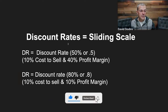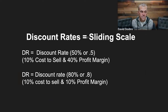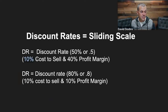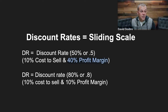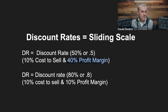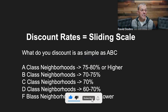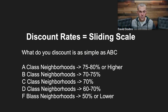The discount rate is a sliding scale based on neighborhood class, just like grades in school — A, B, C, D, F. A 50% discount rate is for D or F class neighborhoods with high risk, giving a 40% profit margin. A 60% rate works for D-class. C-class is 70% — and 70% of neighborhoods will be average C-class, so you'll use 0.7 about 70% of the time. B-class is 70–75%, and A-class is 75–80% or higher.